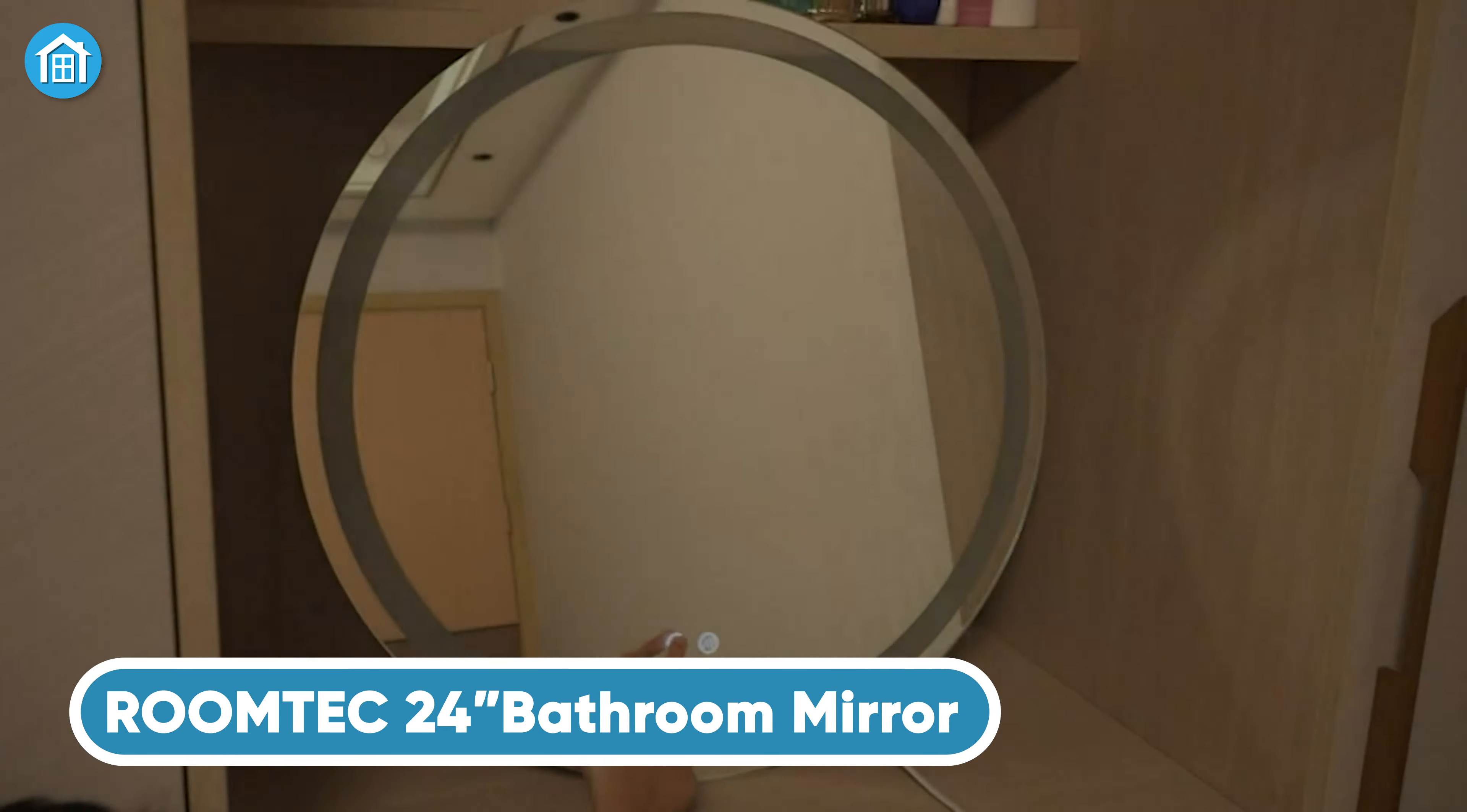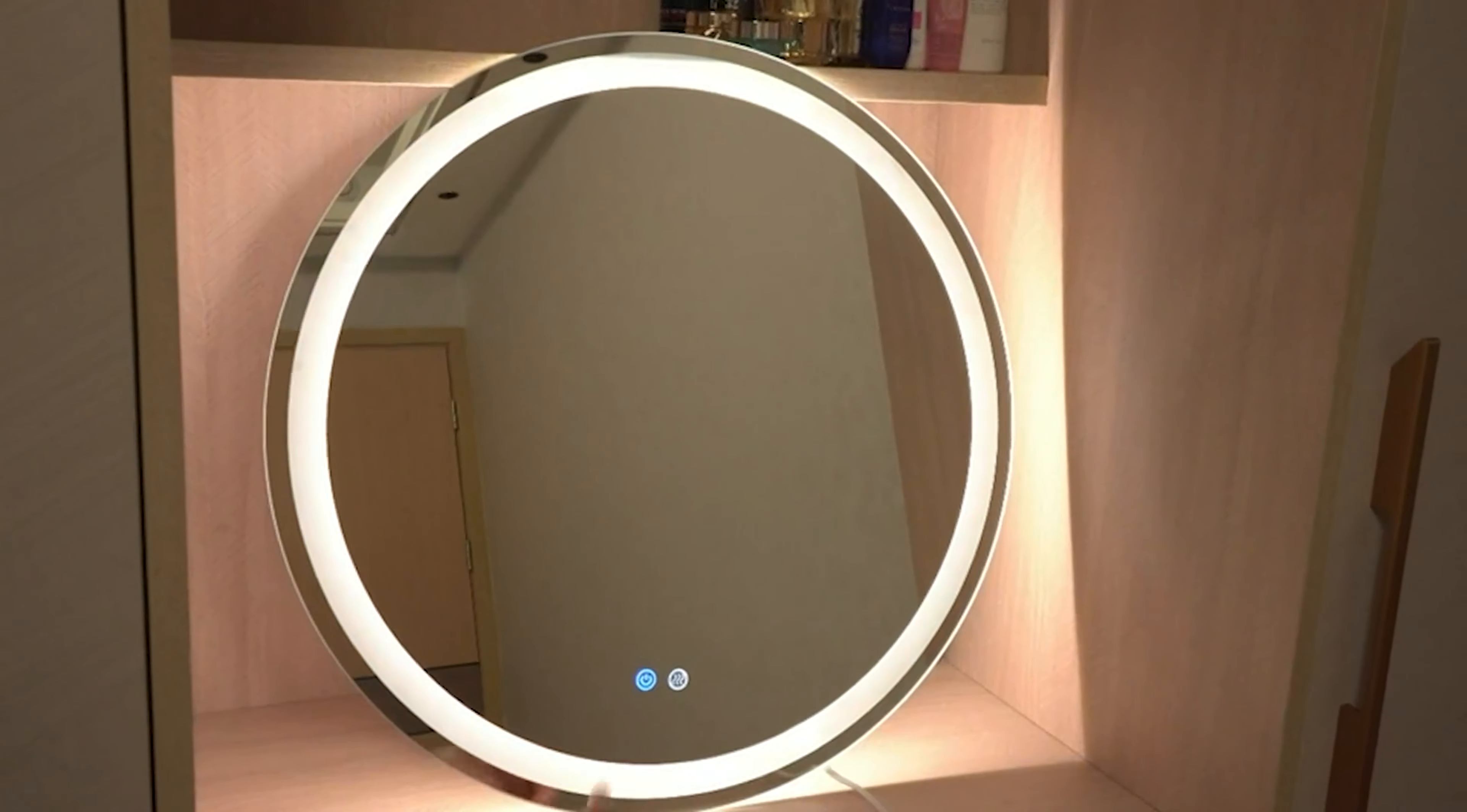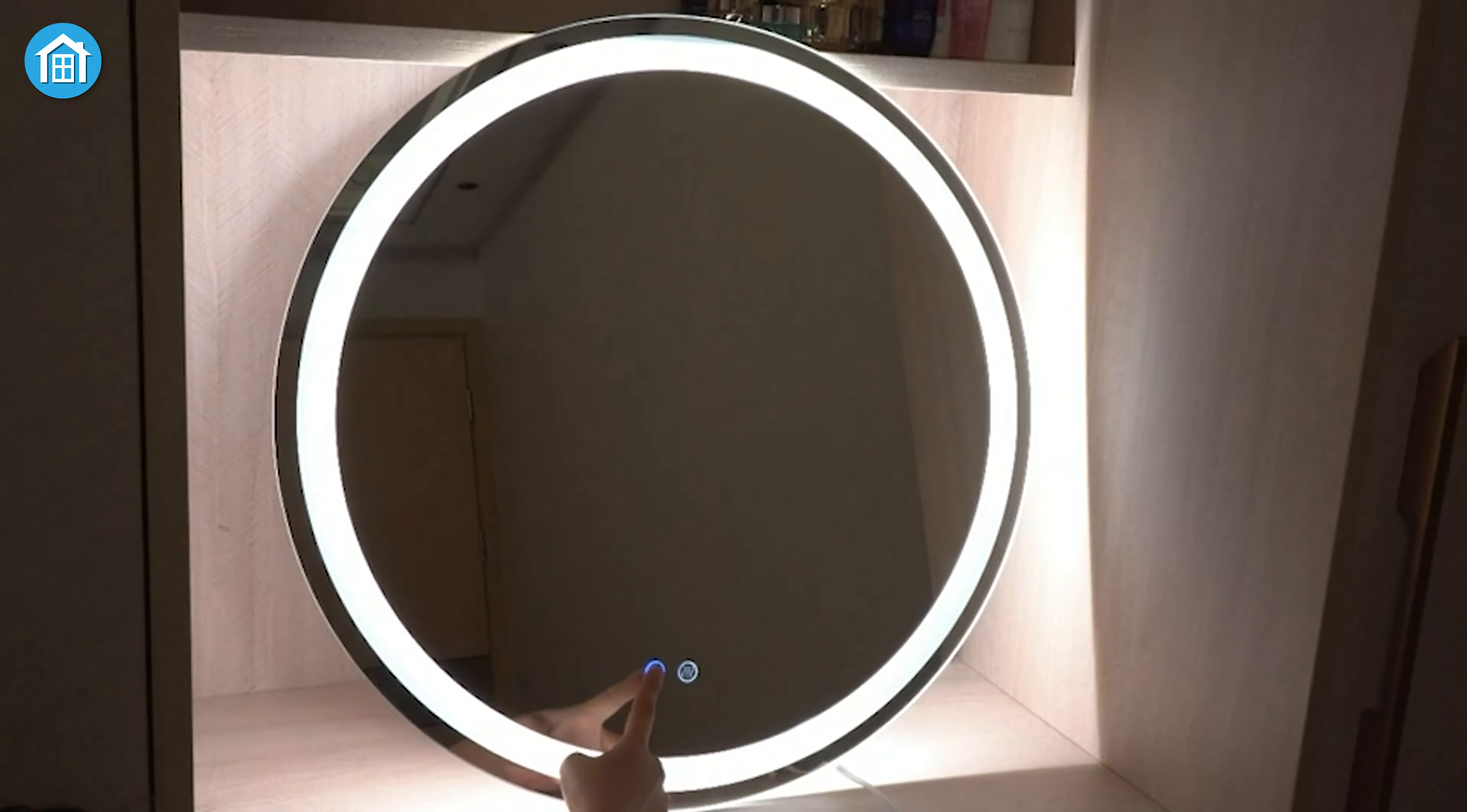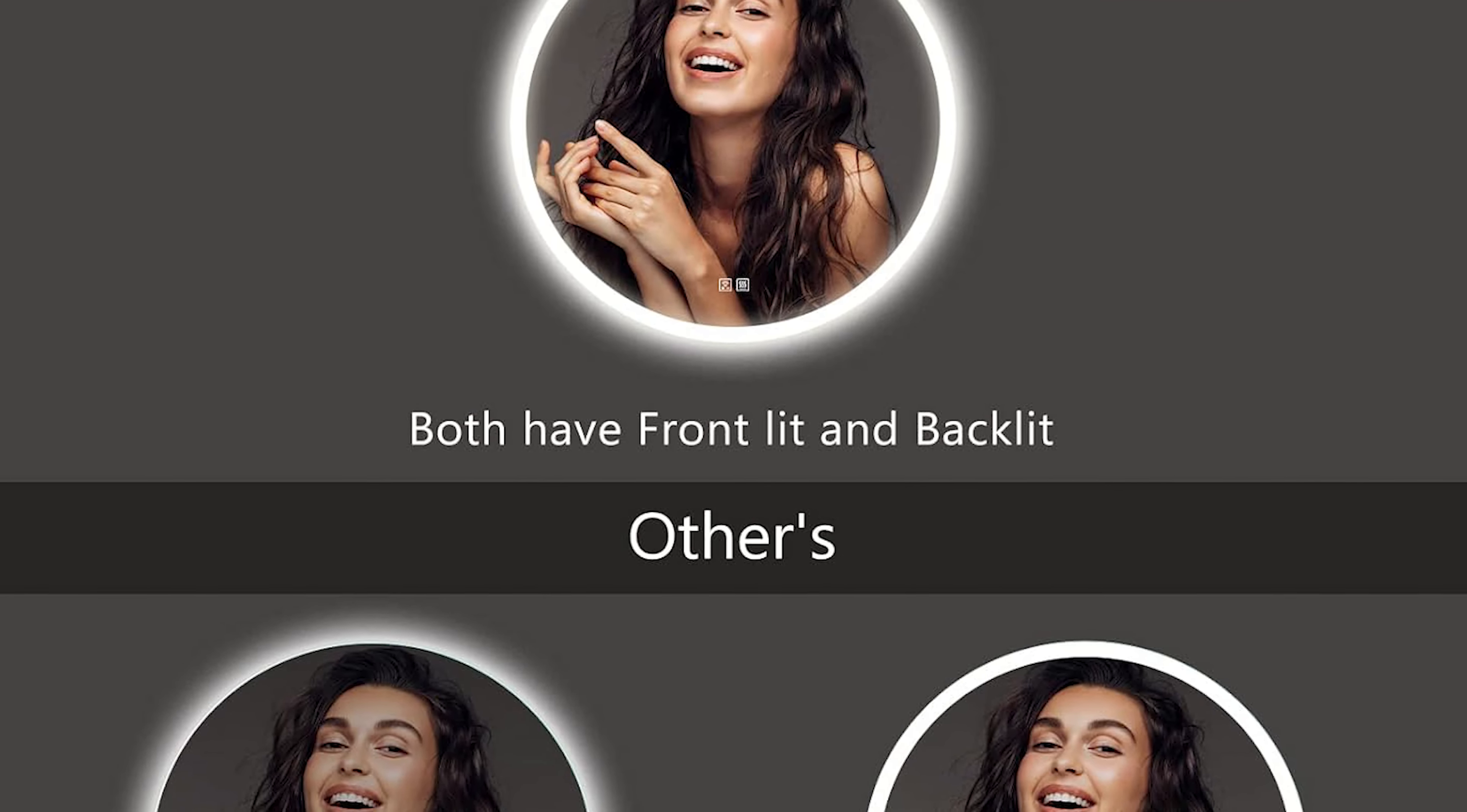Discover the perfect blend of style and functionality with the Roomtek 24-inch Round LED Bathroom Mirror, a blend of elegance and innovation that transforms your bathroom routine. With dimmable LED lights that adjust from daylight to super bright, it caters to every mood and need, whether you're applying makeup or aiming for the perfect selfie.